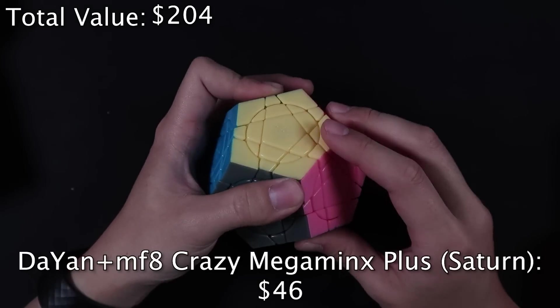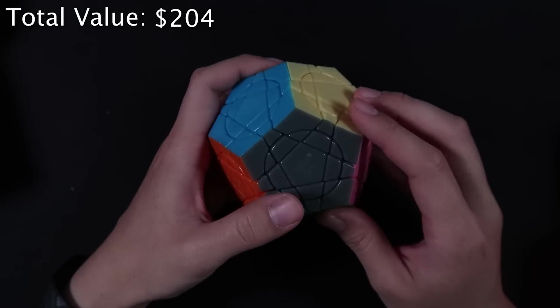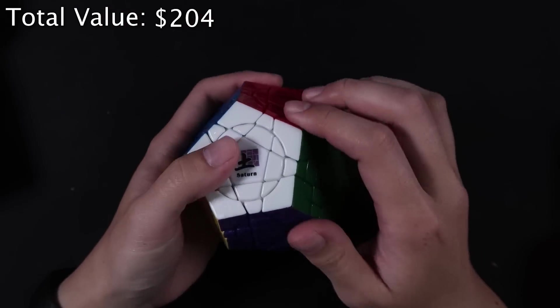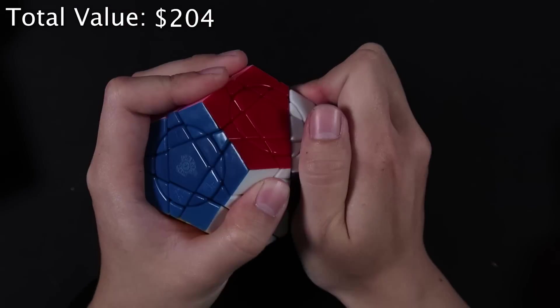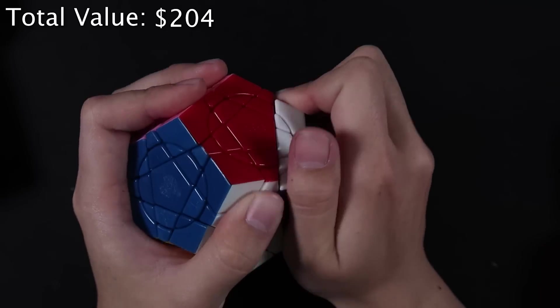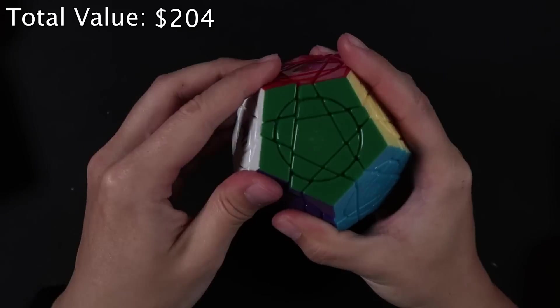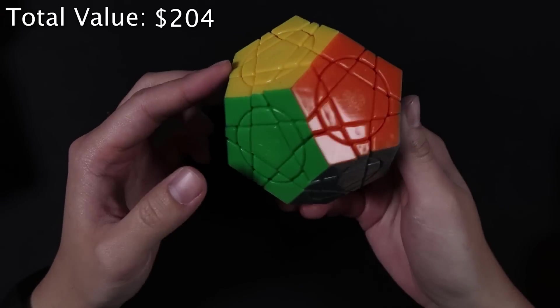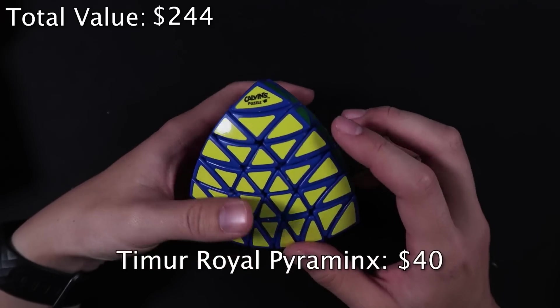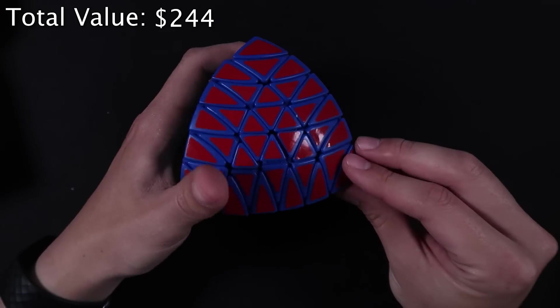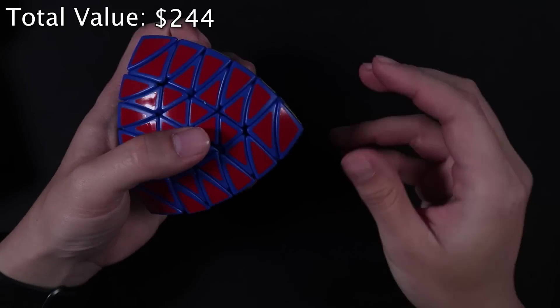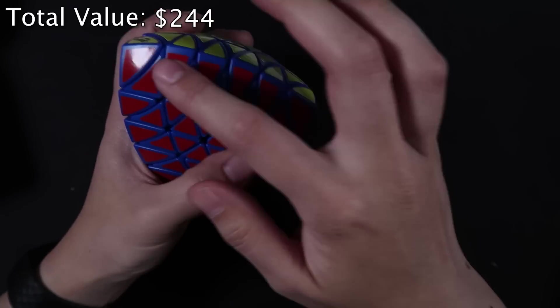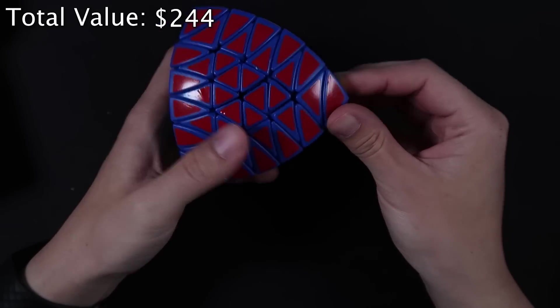And then this crazy cube, I believe, is the Diane MFA Crazy Megaminx Plus Saturn version. This cube really does not turn very well. It looks cool, and I'm all for these kinds of puzzles that are just really unique. It's also very heavy. This is the Temur Royal Pyraminx. This is a crazy puzzle. It turns really well. It's basically like a five-layered Pyraminx kind of puzzle.